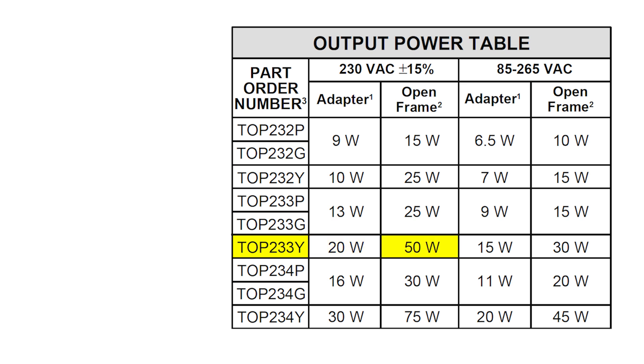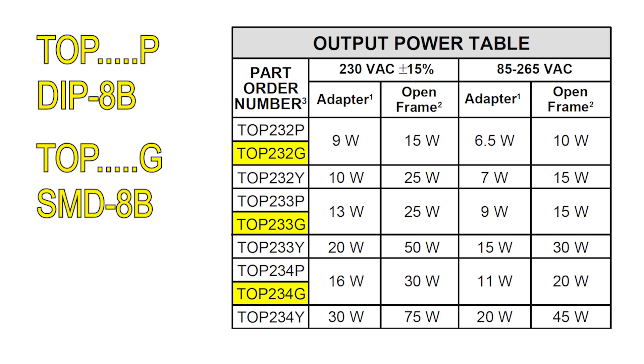If, when creating a power supply, it is designed to operate in a wide voltage range from 85 to 265 volts, then its power will be less. Microcircuits with the index P at the end of the marking are produced in a DIP package, G in SMD housing, and with the index Y in the TO220 case. This is the most powerful version.